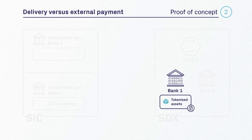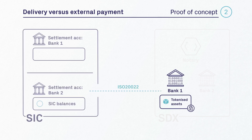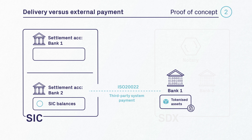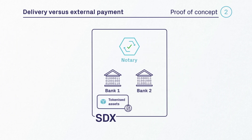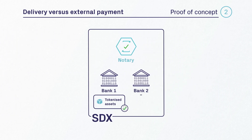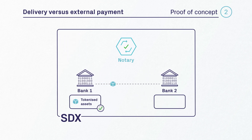The SDX system then generates a payment ISO 20022 instruction to the SIC system. The instruction is a third-party system payment, which instructs the SIC system to transfer SIC balances from Bank 2 to Bank 1. Upon confirmation of the payment from the SIC system to the SDX system, the notary node signs the transfer of the blocked tokenized assets from Bank 1 to Bank 2.